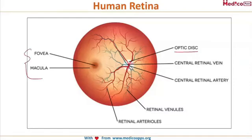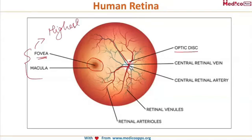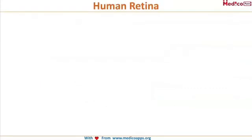Next, a bright yellow spot that you will see to the left of the optic disc is your fovea and the macula. The macula is the whole area and the central region is called the fovea — it has the highest visual acuity. And then the vessels: the central retinal artery, the retinal venules, and the retinal arterioles.